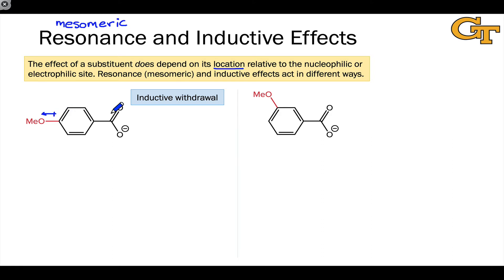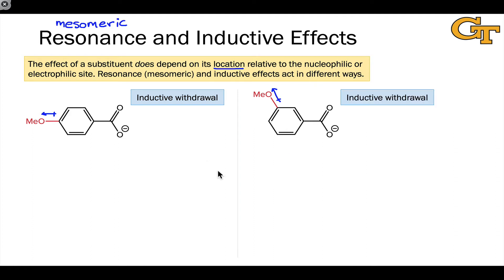This may not jive with your earlier understanding of alkoxy groups as electron donating overall — that's because of the resonance effect, which we'll get to a little bit later. But inductively, the methoxy group in both cases is withdrawing. Just thinking about the inductive effect, we can ask about the relative strengths of inductive withdrawal in the para and meta isomers.